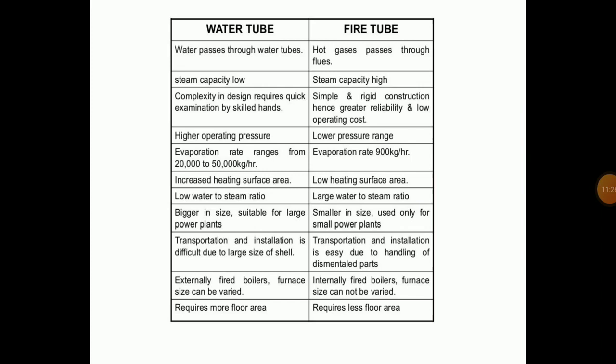In water tube boilers, water passes through the water tubes while the steam storage capacity of these boilers is low. The complexity of design requires examination by skilled hands and high operating pressure is generated. The evaporation rate ranges from 20,000 to 50,000 kg per hour. The low water-to-steam ratio makes them larger in size and suitable for large power plants, though transportation and installation is difficult due to the large size of the shell.